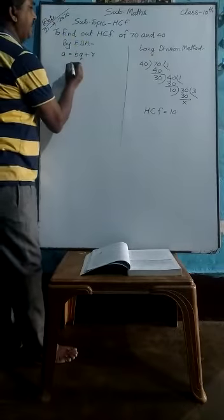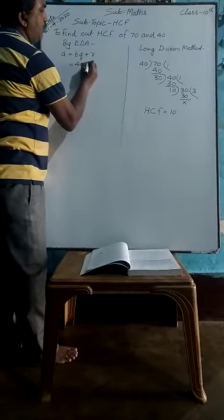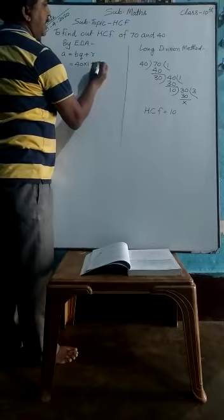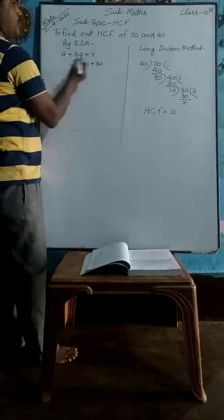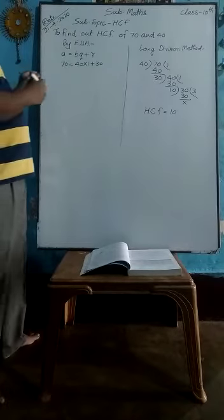In the first step you can write 40 times 1 plus remainder 30, which is equivalent to this dividend 70.